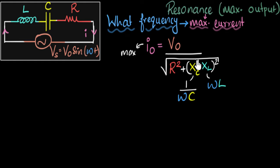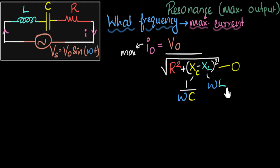Let's see. I'm going to ask myself, what is the minimum value I can attain here? Well, since this is a square, I know it cannot be negative — any number squared always gives a positive number. So the minimum this can attain is zero. And to obtain zero, Xc must cancel out with XL. In other words, Xc should equal XL. That is my condition to get zero.